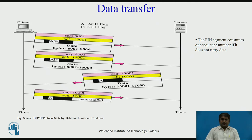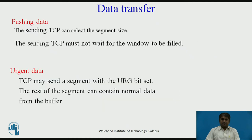The acknowledgment is piggybacked with the data. After a connection is established, the client sends 2000 bytes of data in two segments. The server then sends 2000 bytes in one segment. The client sends one more segment. The first three segments carry both data and acknowledgment, but the last segment carries only an acknowledgment because there is no more data to be sent. The segment from the server does not set the push flag data service.